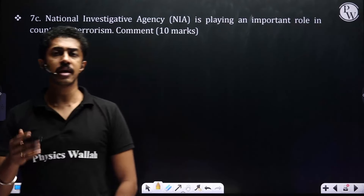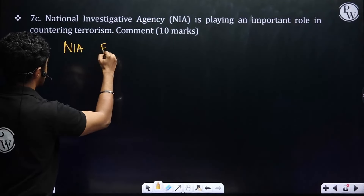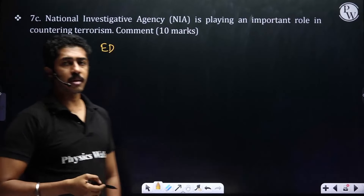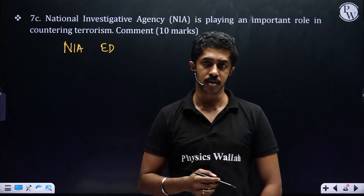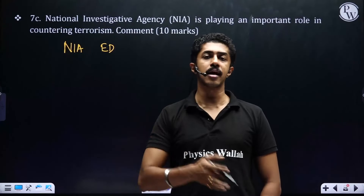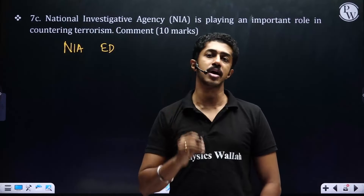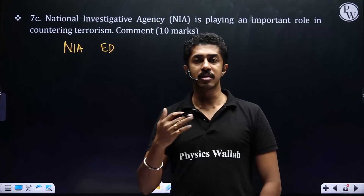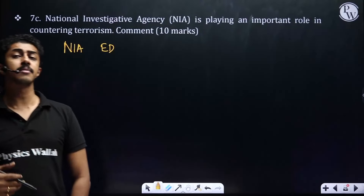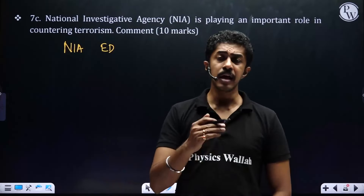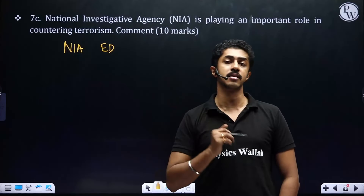Next: 'National investigative agencies are playing an important role in countering terrorism - comment.' NIA was constantly in the news, as was ED. The key issue: not all NIA arrests lead to successful convictions - courts have sometimes reprimanded NIA for arresting individuals without proper evidence on terrorism charges. However, NIA's conviction rate is more than 90%, and together with the ED they are a formidable force in dealing with terrorism and its financing.